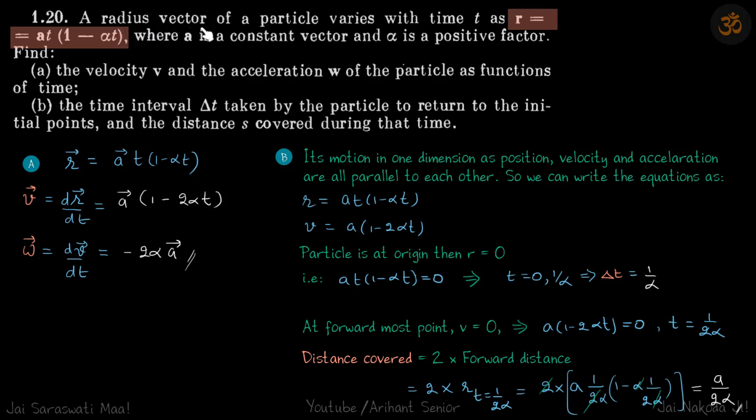A particle's radius vector is given as r vector equals a vector times t times 1 minus alpha t. A is a constant vector and alpha is a positive constant. We need to find the velocity and acceleration of the particle in vector form as a function of time, and the time interval it takes for the particle to return to its initial point and the distance traveled during the process.